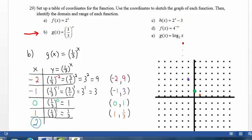And when x is 2, we have 1 third to the second power, 1 third squared. 1 third times 1 third is 1 ninth. We plot the point 2 comma 1 ninth.